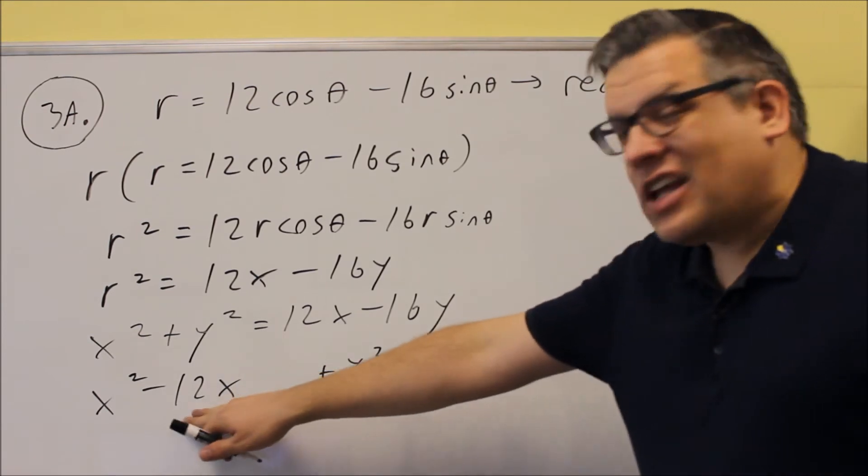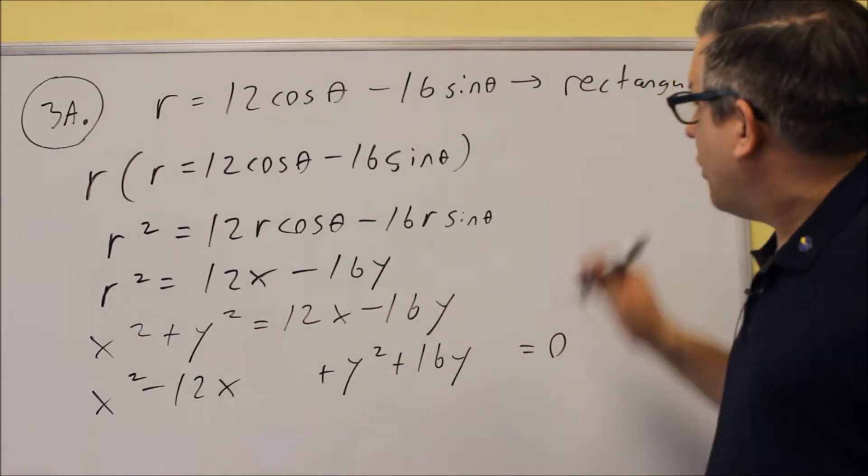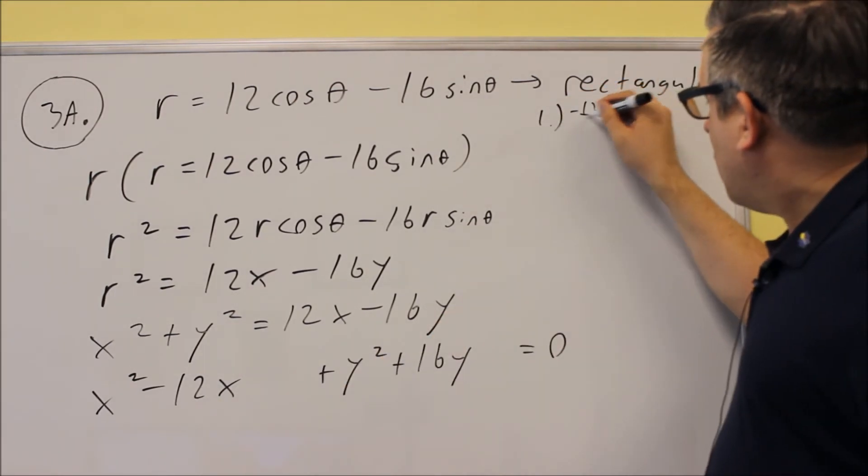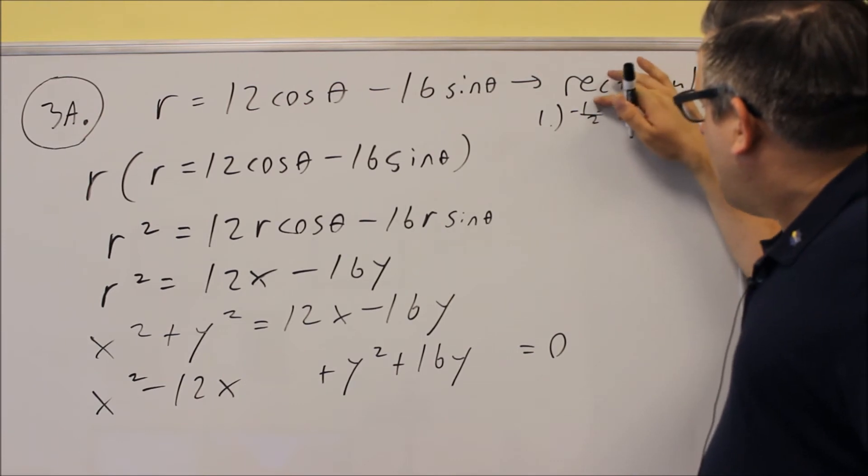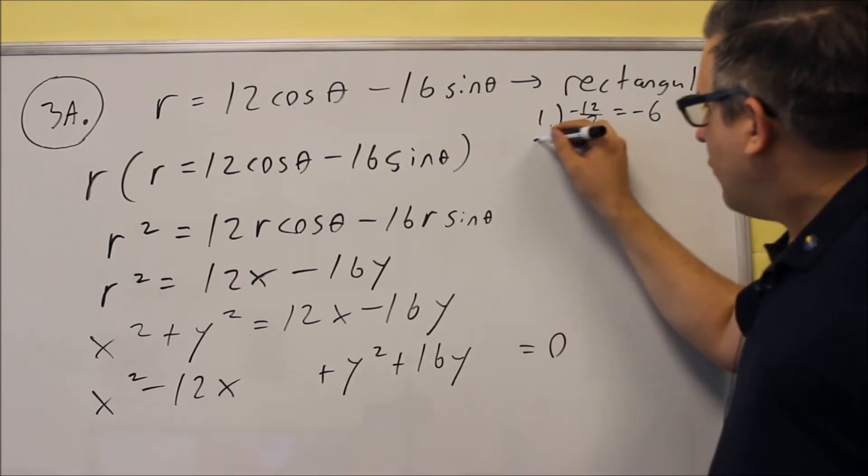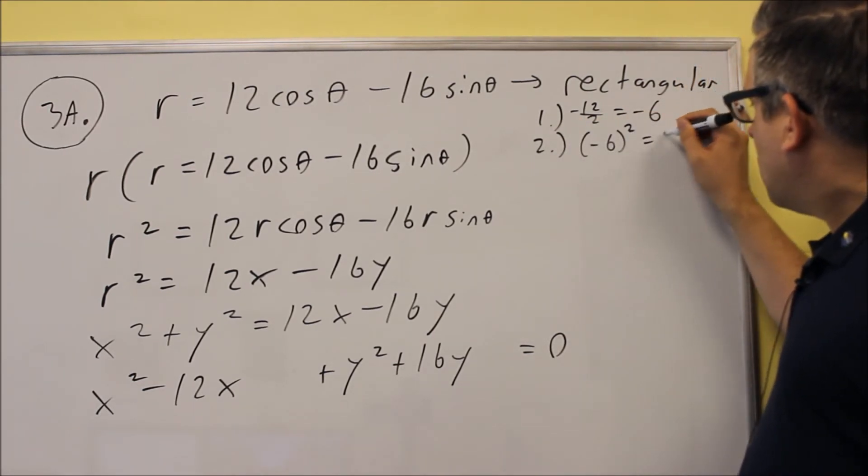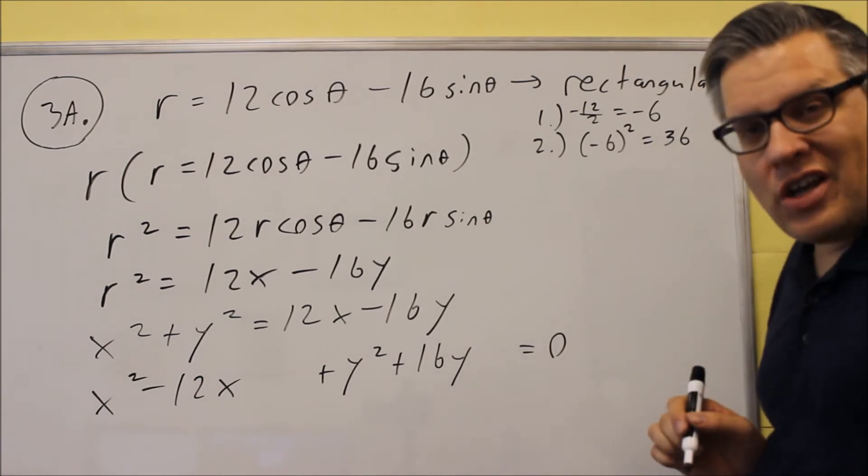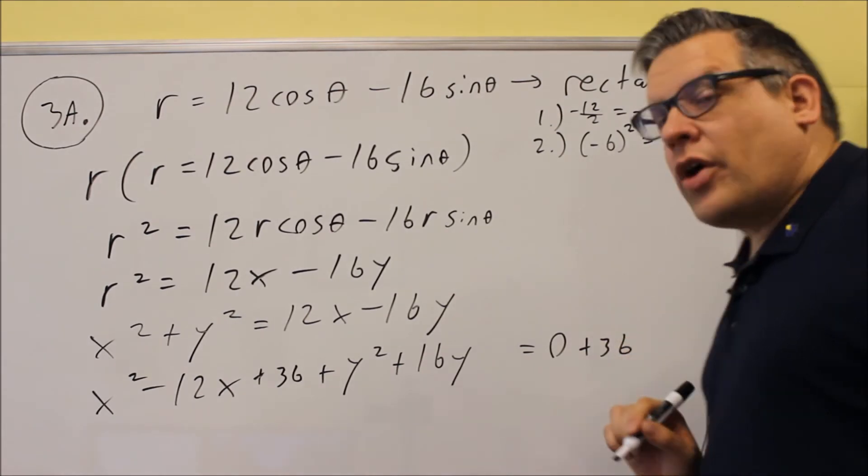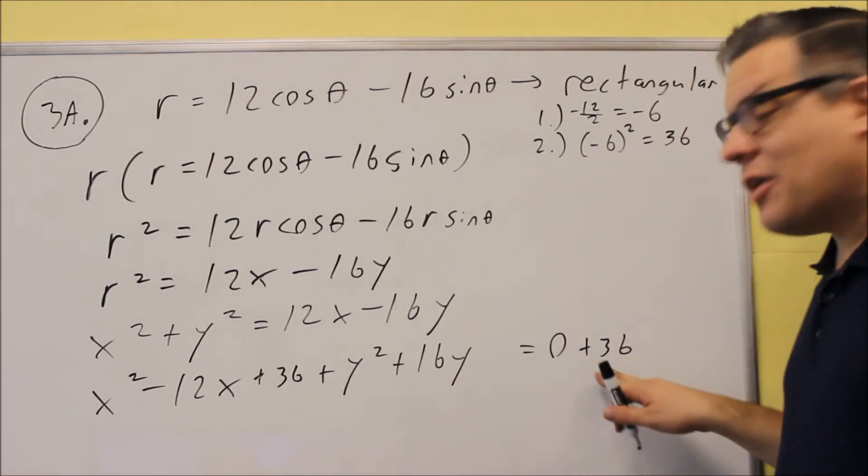Complete the square steps involves taking the number in front of the x, divide it by 2, and then squaring it. So let's show those steps here. So step 1 will be to take negative 12 divided by 2, and we get negative 6. For step 2, we're going to square the negative 6, and you'll get 36. You want to add this to both sides of the equation in order to make the equation balanced. So again, that's a really important step. Add to both sides.